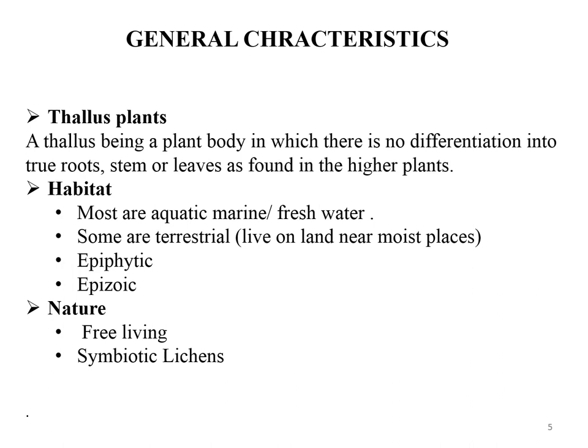The plant body of algae is the thallus — a plant body in which there is no differentiation into true roots, stem, and leaves, as found in higher plants. Algae are the most primitive and simple plants. Their habitat: most are aquatic, both marine and freshwater.